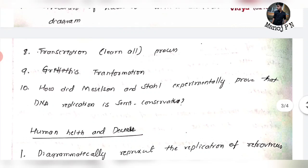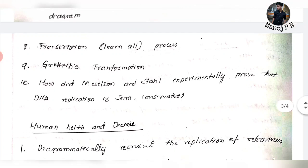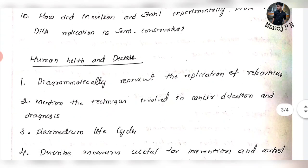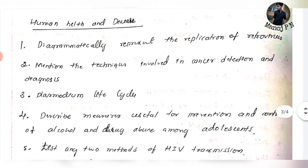It is called Griffith's Transformation experiment. Also the semi-conservative DNA replication experiment — DNA replication is semi-conservative, and this experiment is also called the Meselson-Stahl experiment. And then human health and disorders.